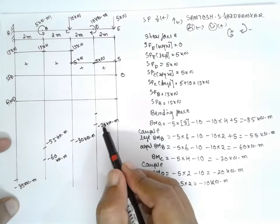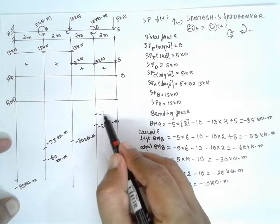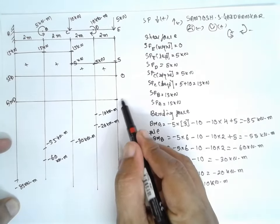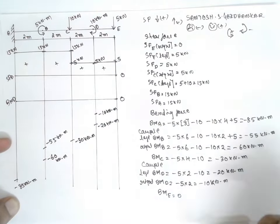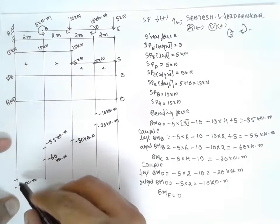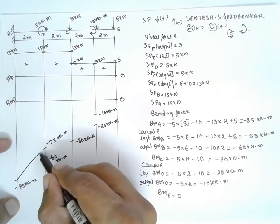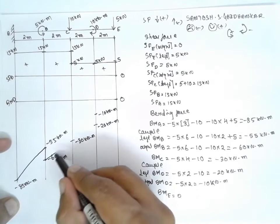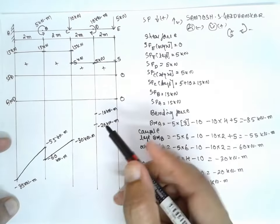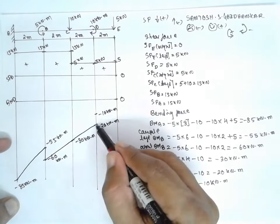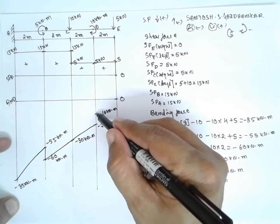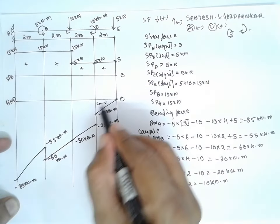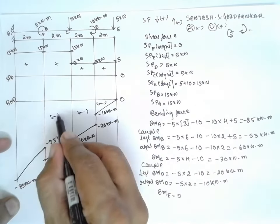The final value at E is zero. Since there is no UDL, all segments in the bending moment diagram are straight lines — completely straight lines throughout. All values are negative, so the entire bending moment diagram lies below the baseline.